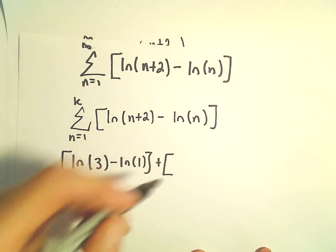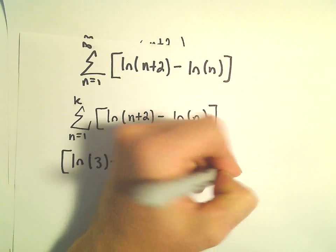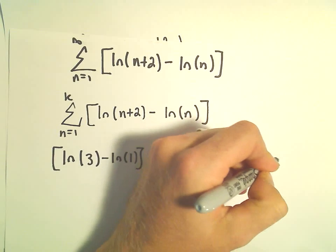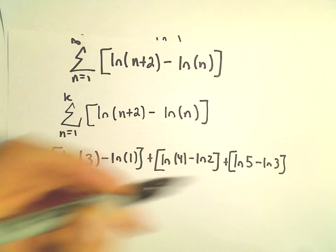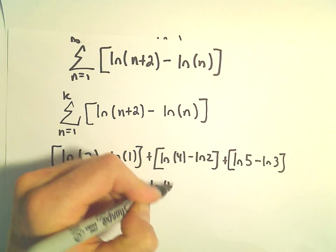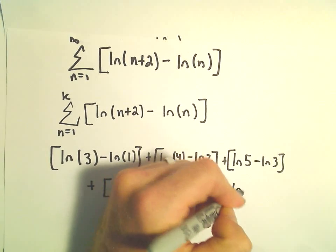Plus, we would plug in 2, so we'd have ln of 4 minus ln of 2. And then we would plug in 3, so ln of 5 minus ln of 3. I'm going to write a couple more terms. ln of 6 minus ln of 4, and maybe one more. ln of 7 minus ln of 5.